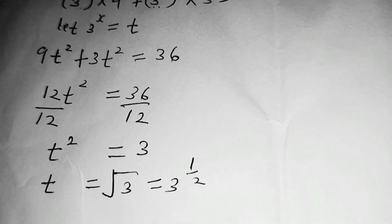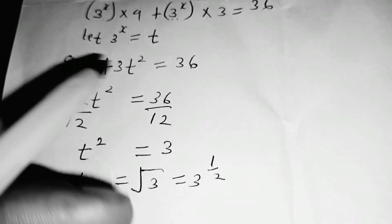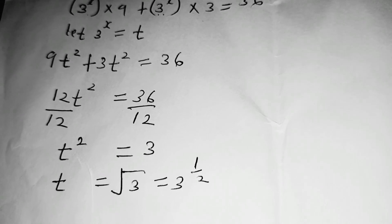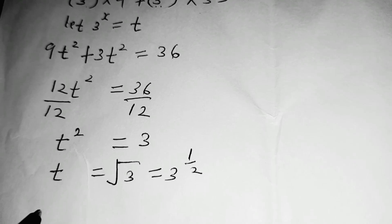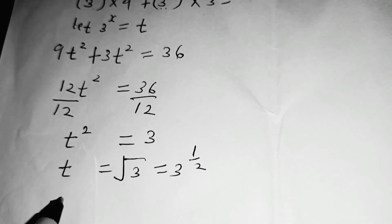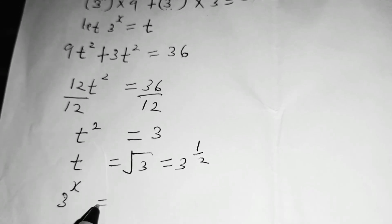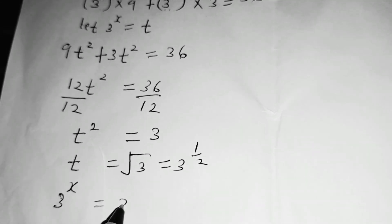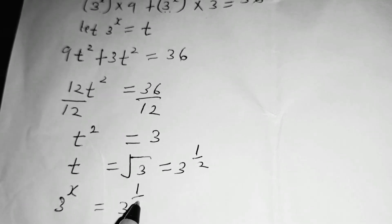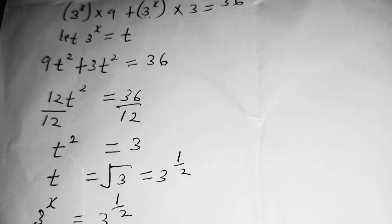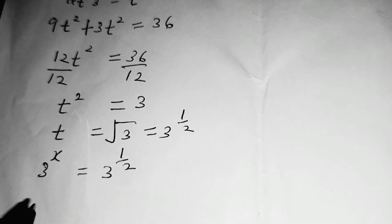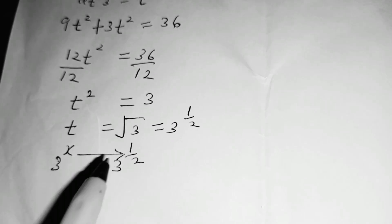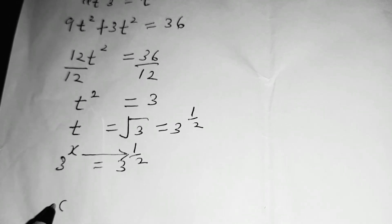The square root means power half. Substituting back, we had let t equal to 3^x. So 3^x equals t, which equals 3 to the power of one half. When the bases are equal, the law of indices tells us we can equate the indices, meaning x is equal to one half.